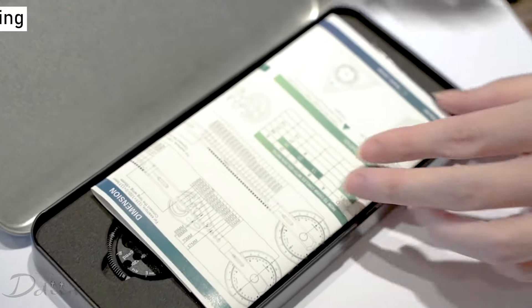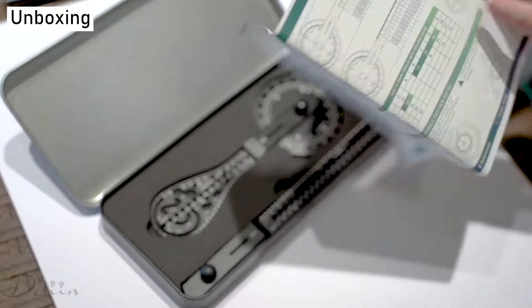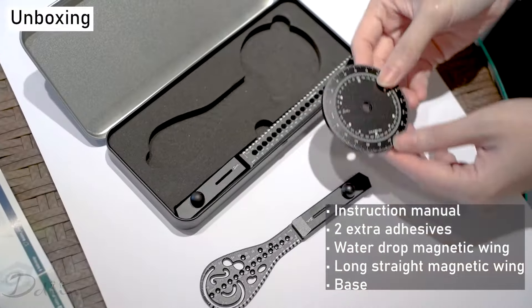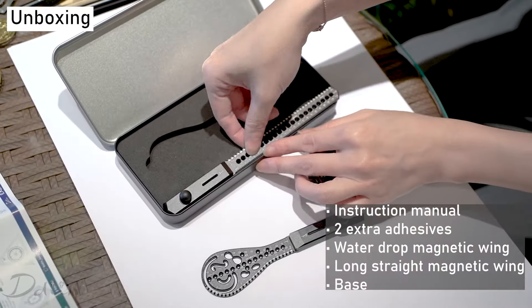The Exlikon MEX kit comes with everything you need to get started, including an instructions manual, two extra adhesives, a water drop magnetic wing, a long straight magnetic wing, and a base.